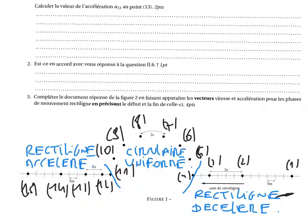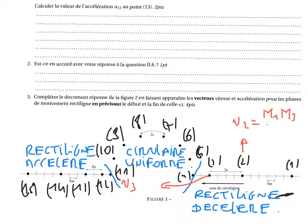La question 3, on nous demande de calculer la vitesse au point 2, donc V2, et la vitesse au point 3, V3. Je rappelle la définition : pour déterminer la vitesse en un point, vous devez avoir un enregistrement avant et un enregistrement après, donc on doit encadrer le point considéré par deux enregistrements. On écrira que c'est la distance parcourue M1M3 sur la durée delta T.